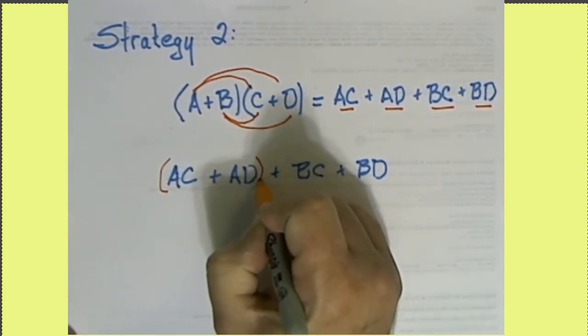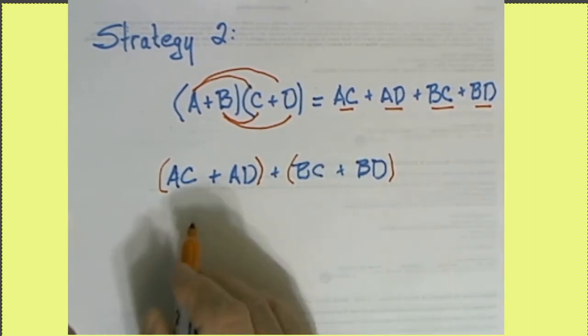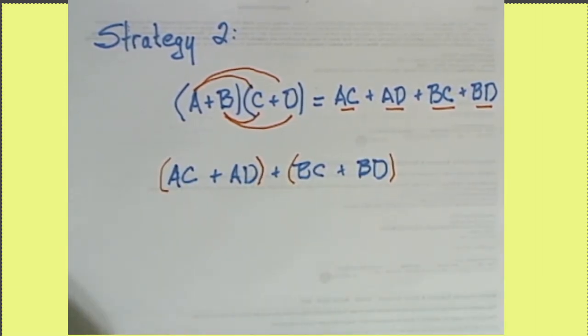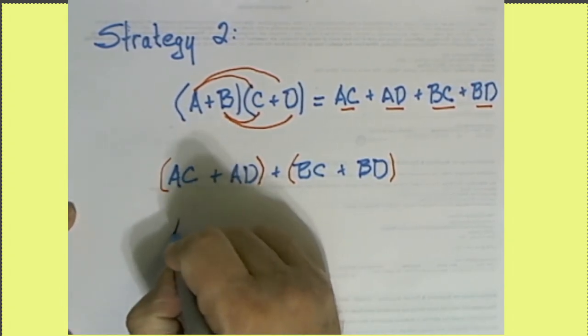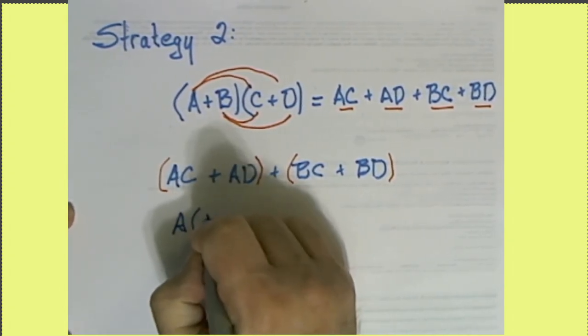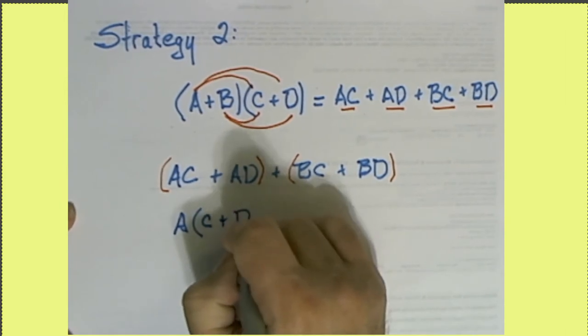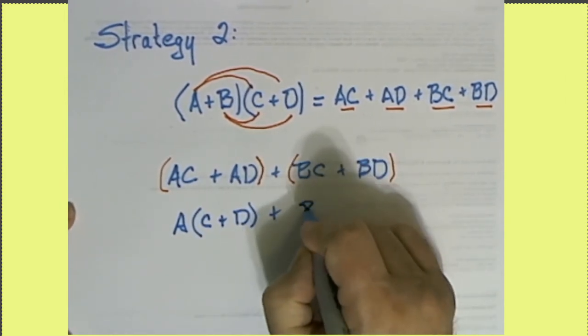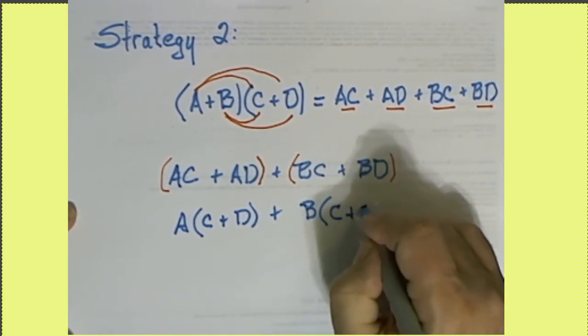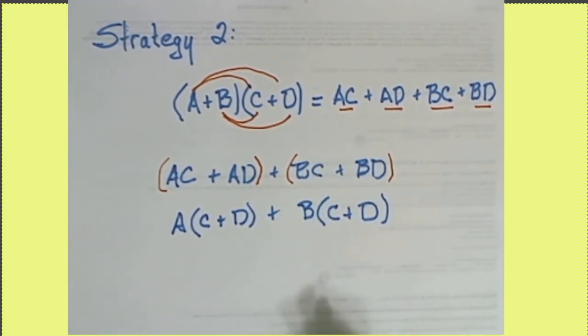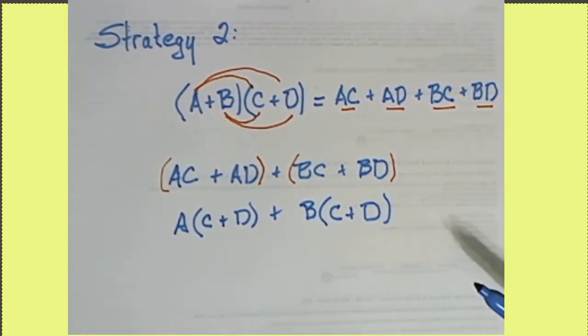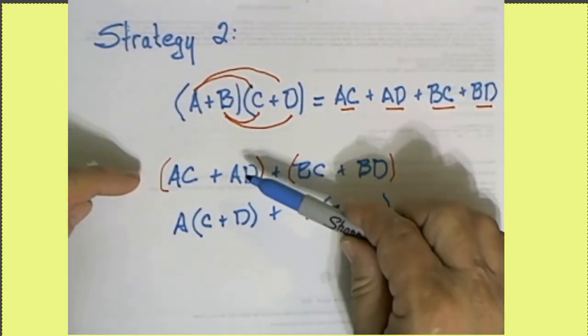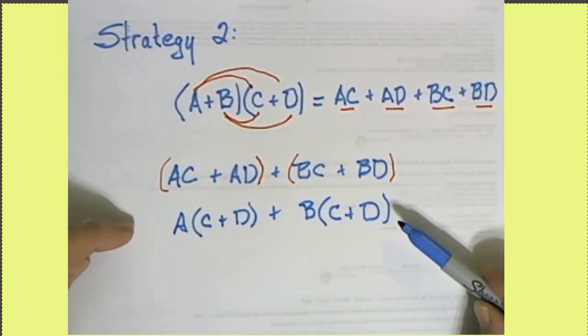So let's group this like this. And then here we'll factor out an A because that's a greatest common factor, A times C plus D. And here we'll factor out a B and we'll have C plus D. Now don't get confused here. Don't think that you've actually factored here. We've factored pieces, but this is not a factored result.